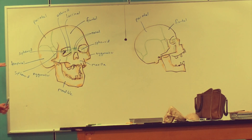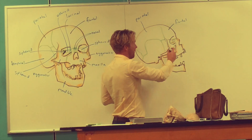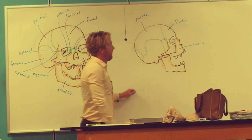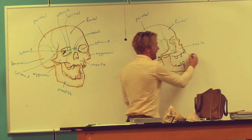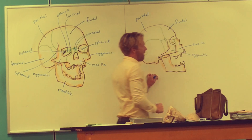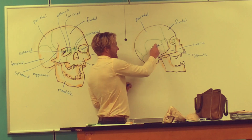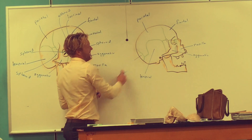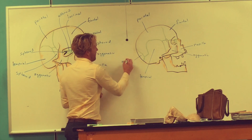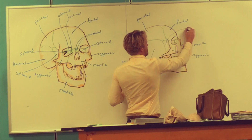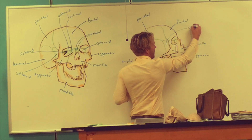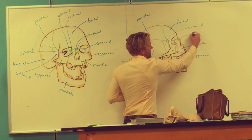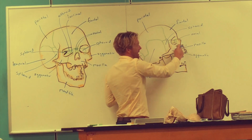Now let's use that same knowledge and move over here. What's this bone? What is this bone? Temporal. Perfect. This bone we haven't named yet — it's your occipital. What about this guy? Sphenoid. That's that little part of the sphenoid. What about this little guy right here on top of the nose? Maxilla — pretty obvious there, it stretches up.